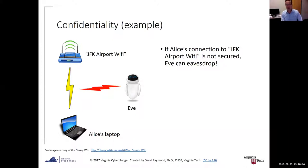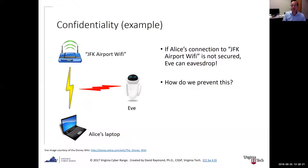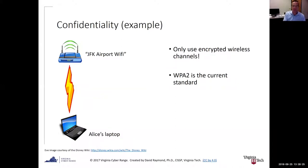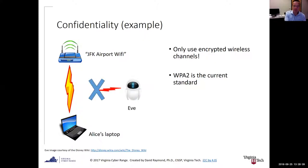How do we prevent that? Use something like WPA2 — encrypted wireless channels. WPA2 is the current standard. If you have an encrypted channel, Eve can still listen but the communication is completely unintelligible because it's encrypted data.